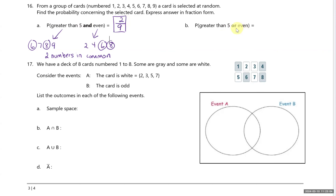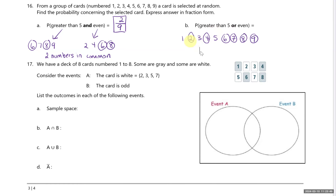For 'or' — union — we combine all numbers greater than five with all even numbers. Writing out the sample space 1 through 9 and circling: 6, 7, 8, 9 for greater than five, plus 2 and 4 as remaining evens. That gives us 6 outcomes meeting one or both conditions out of nine: 6 over 9.